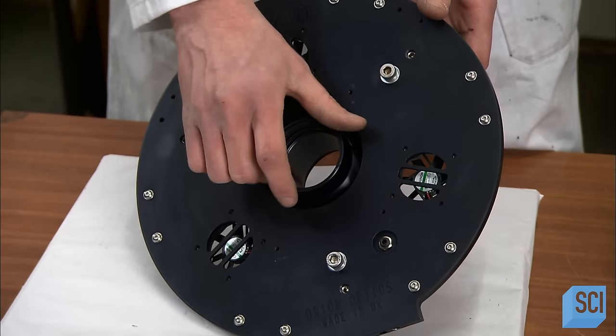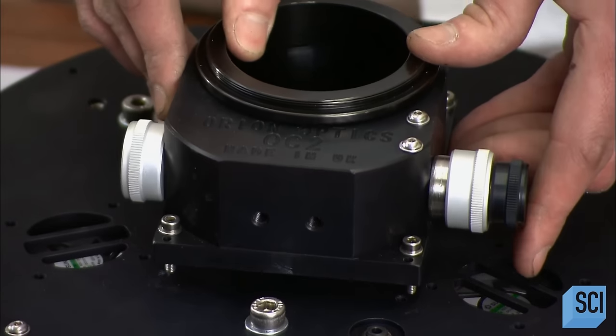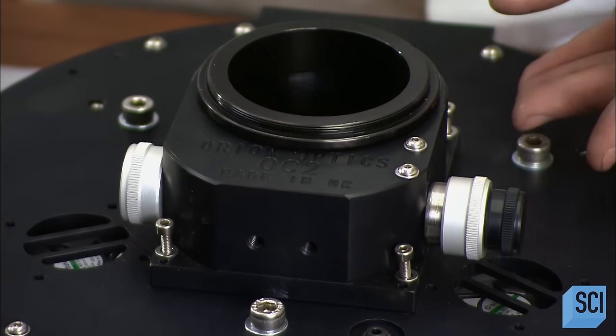Next, a technician screws lenses into the metal housing for the primary mirror. He adds a mount mechanism for the eyepiece, complete with knobs for focusing.